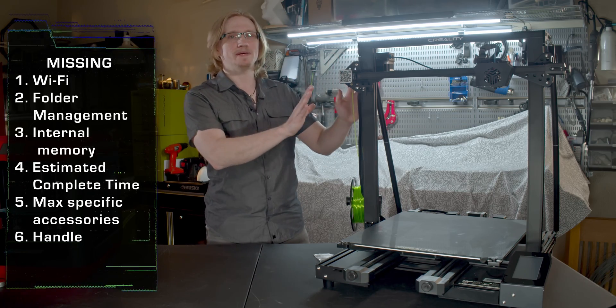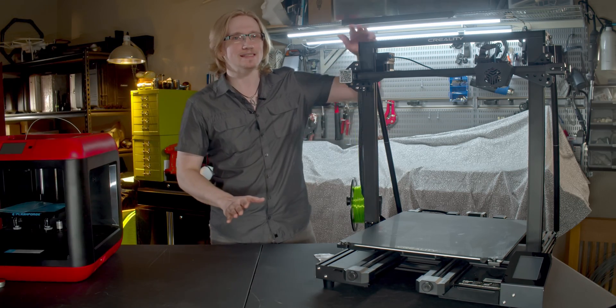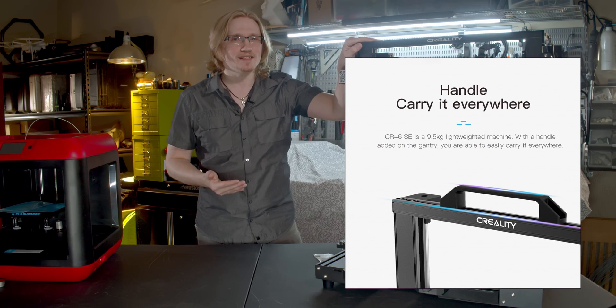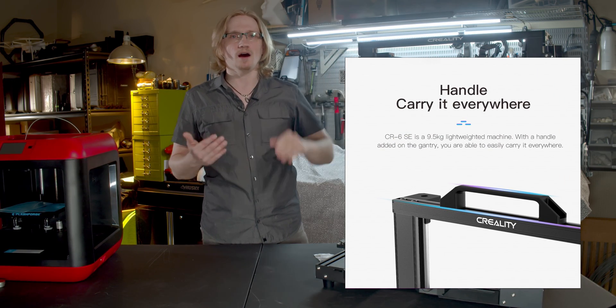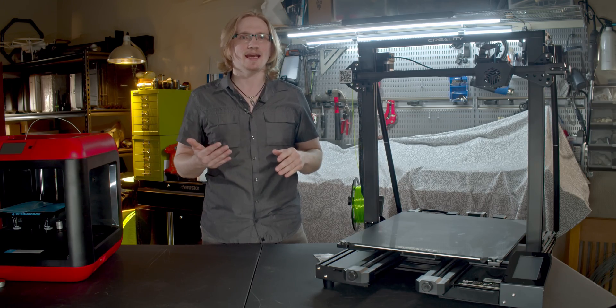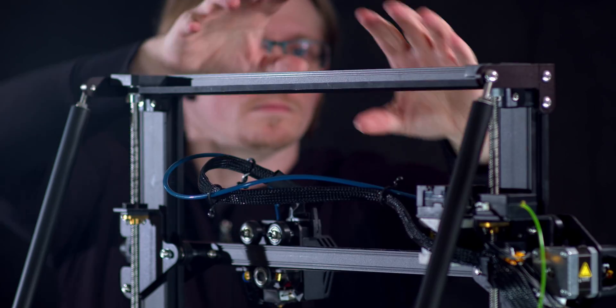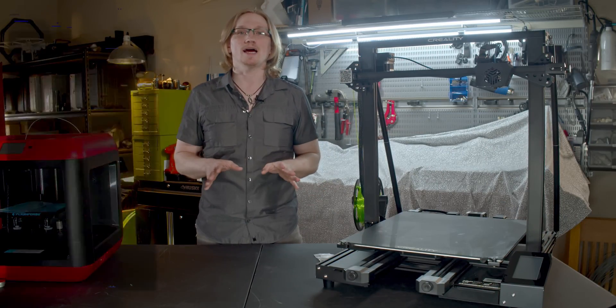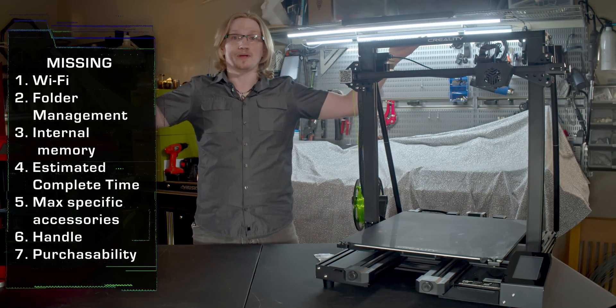No handle. Yeah, I know this thing is a beast, so it makes sense not to have one, and its clearance is already tall enough. But I was kind of excited by the SE having one, and to be honest, having a dedicated handle when I'm moving this thing around would have been very helpful, so I'm not grabbing the timing belt. Final missing item. It's not available for retail purchase yet!